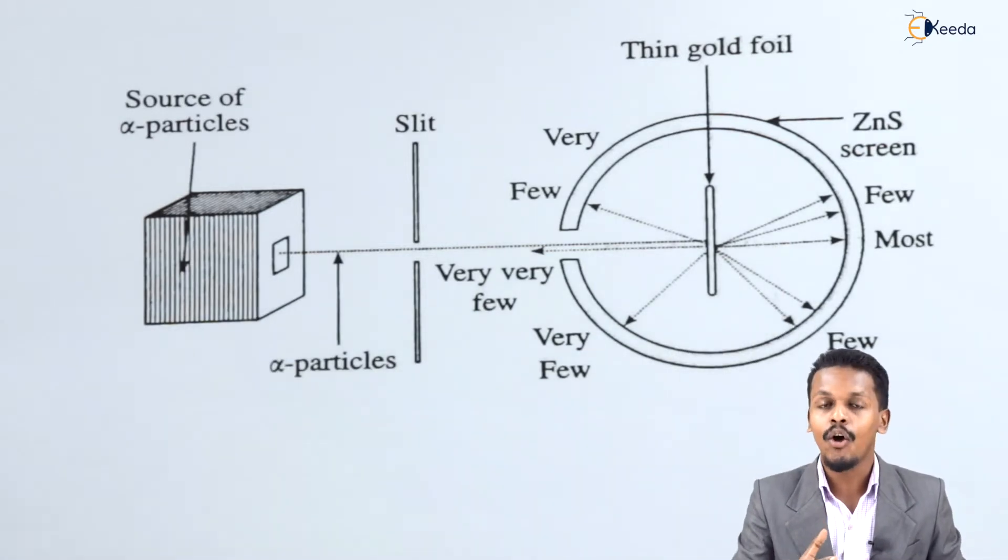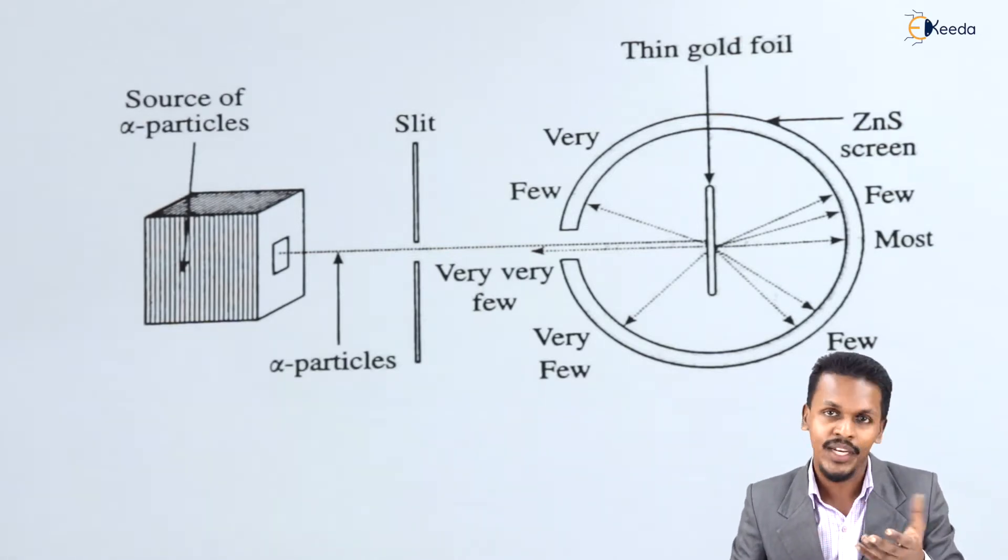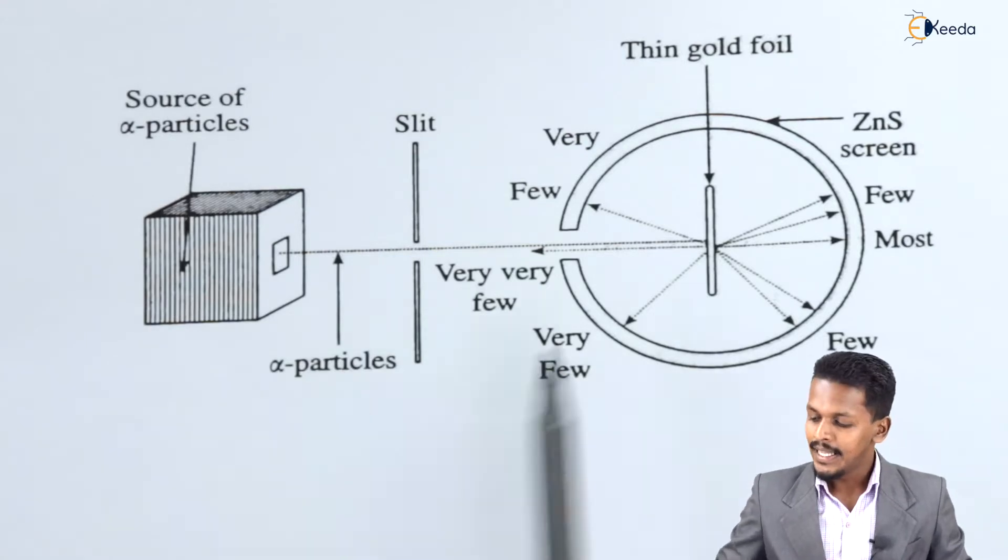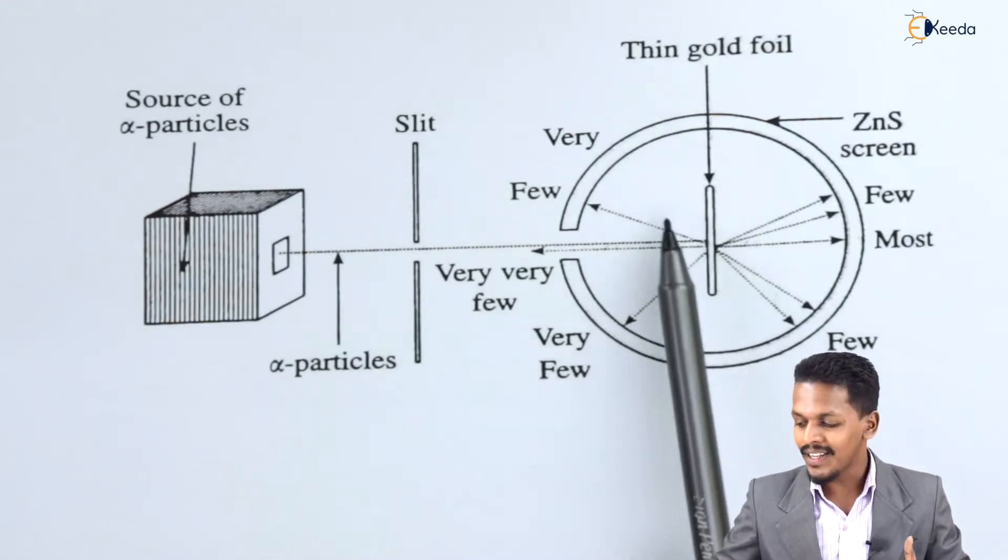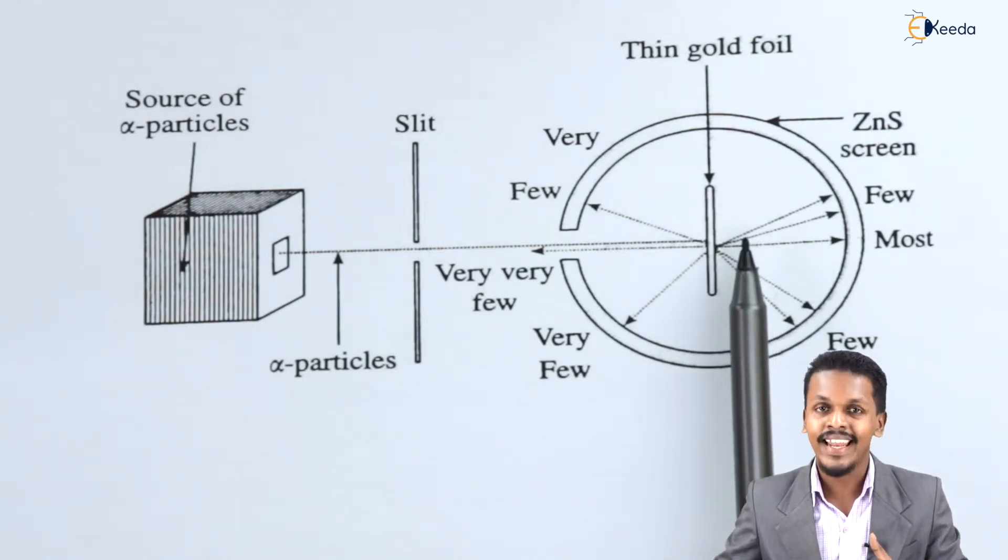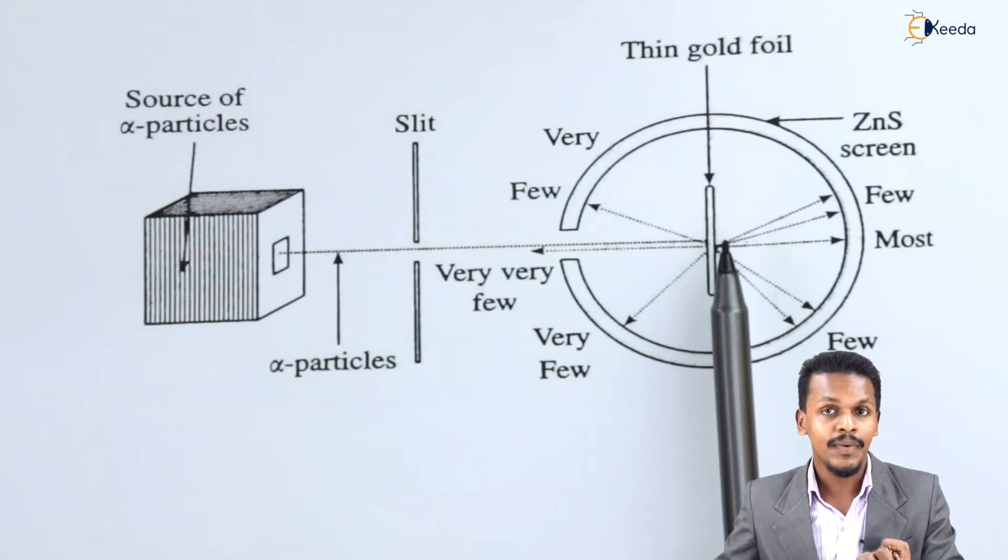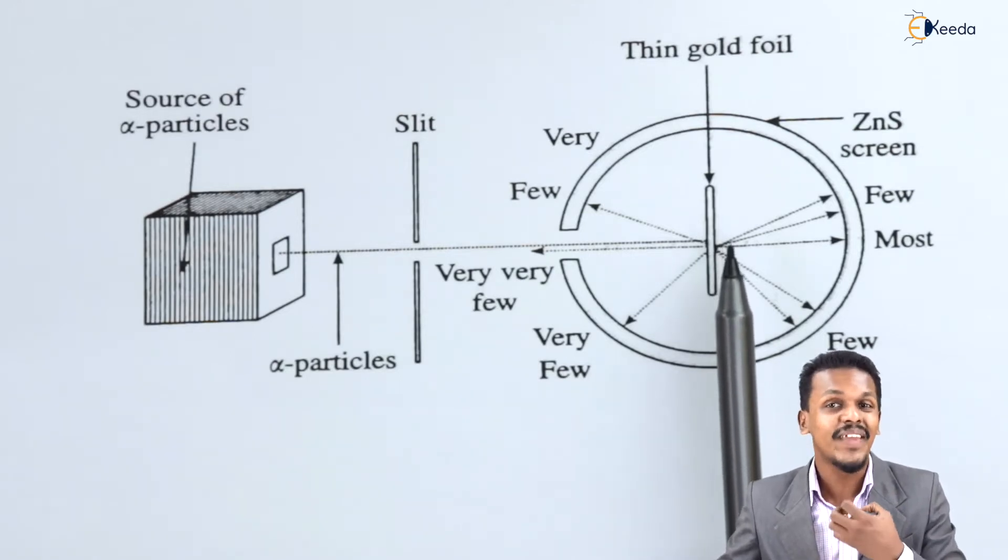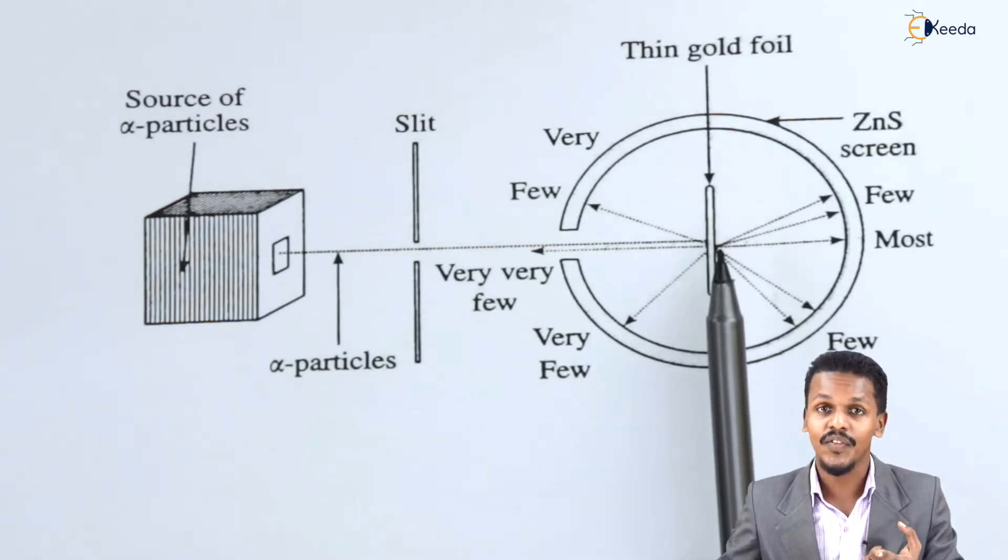In that case, Rutherford predicted a structure of atom which was based on a particular conclusion. The conclusion was, if most of the alpha particles are penetrating through this thin foil of gold, then the atom is basically occupied with vacant spaces. That was one of the predictions.